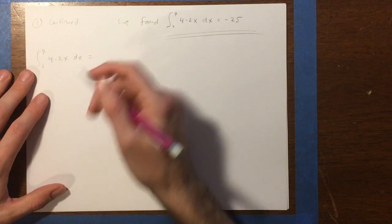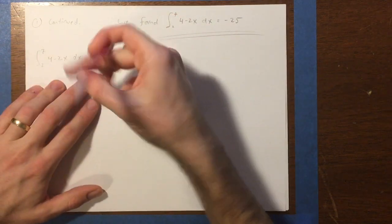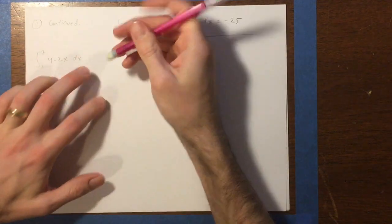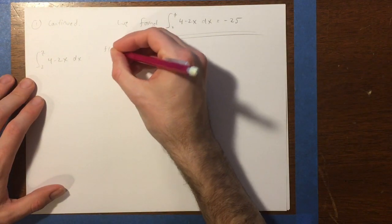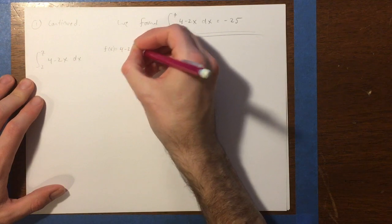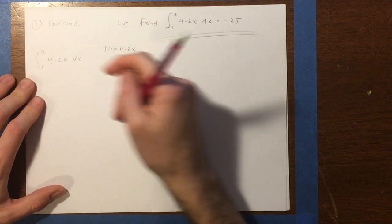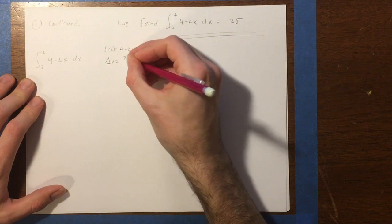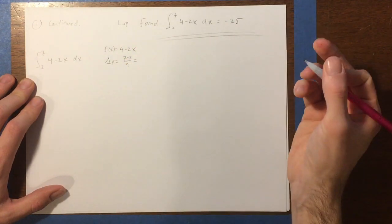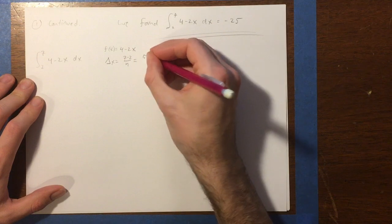All right, so this here we have as our function, and I'm not going to write an equal sign yet. Because before I start doing a limit of a Riemann sum, I'd like to write down some information. The function I'm working with here is 4 minus 2x. 2 to 7 is my interval. So that means delta x is going to equal 7 minus 2 over n, where n is the number of rectangles. So this would be 5 over n.